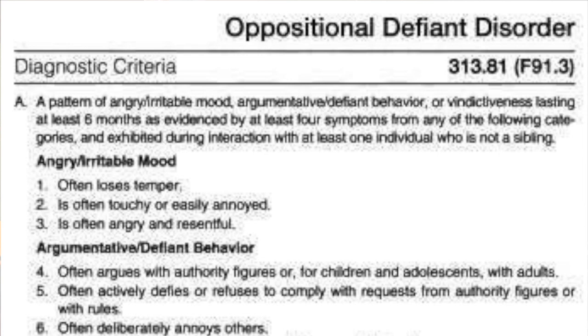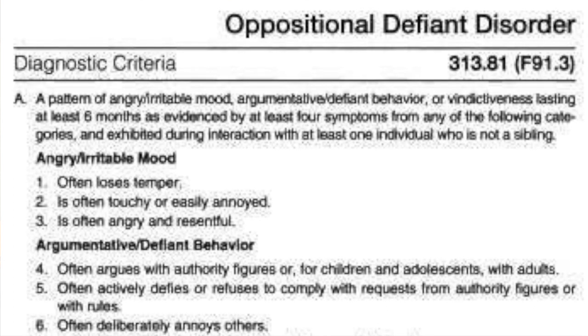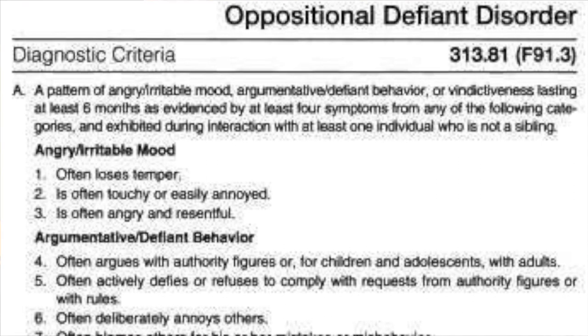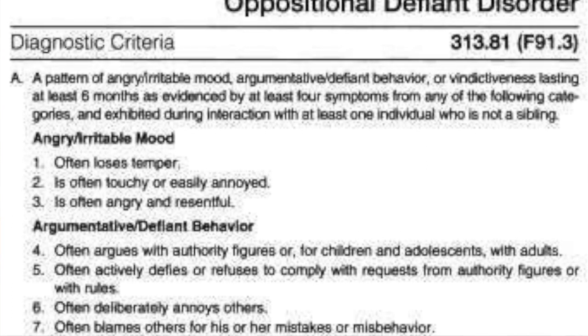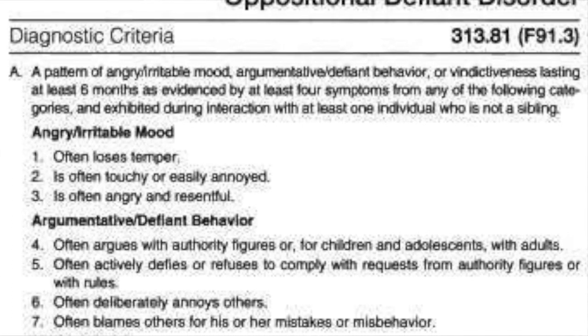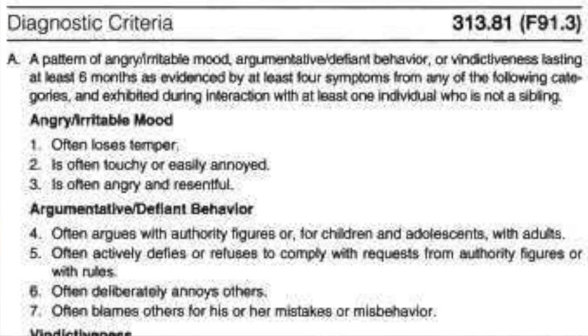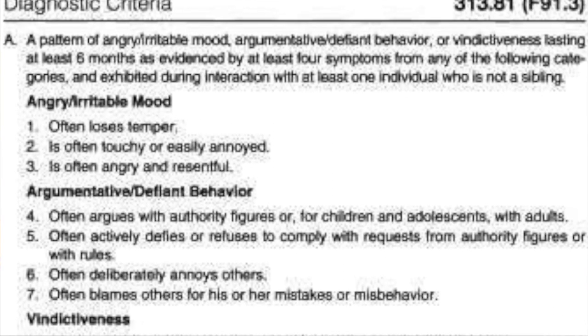Oppositional defiance disorder — in order to have it, these are the symptoms you must exhibit: often loses temper, is often touchy or easily annoyed, is often angry and resentful. Argumentative, defiant behavior: often argues with authority figures such as teachers, parents, principals, law enforcement. Often defies or refuses to comply with requests from authority, tends to deliberately annoy people, or blames others for their mistakes and behavior. This is oppositional defiance disorder.